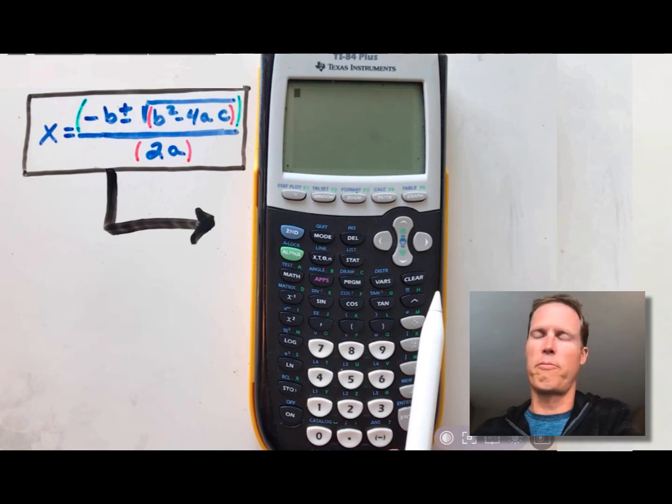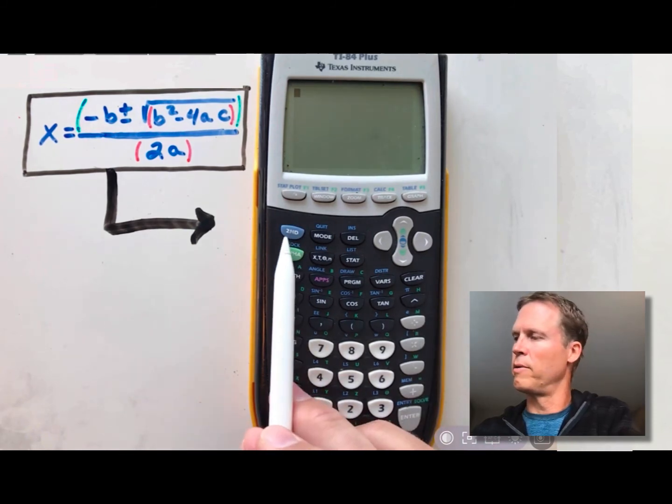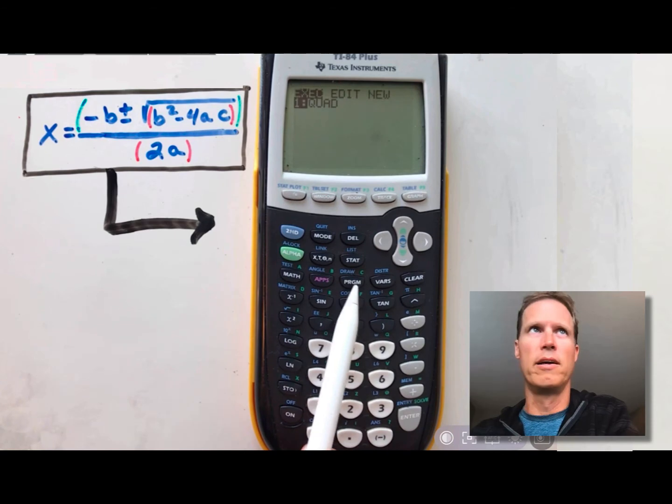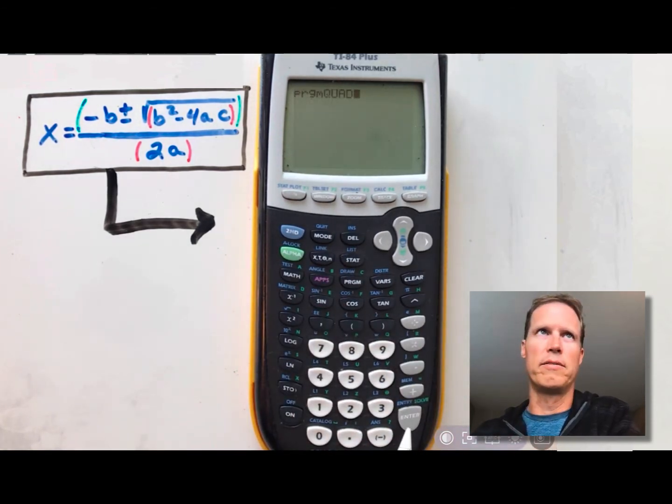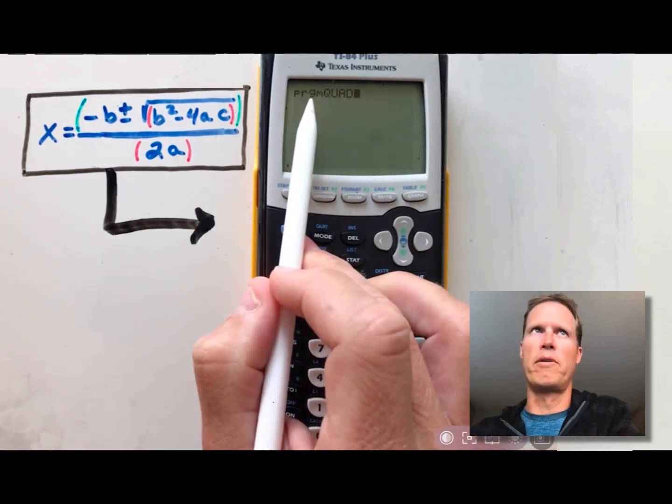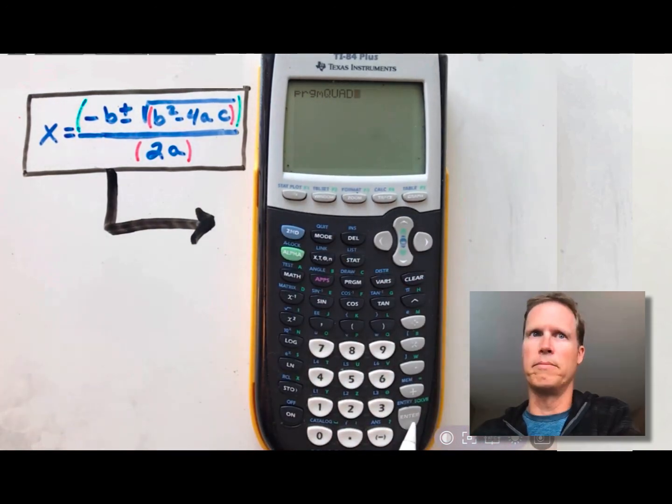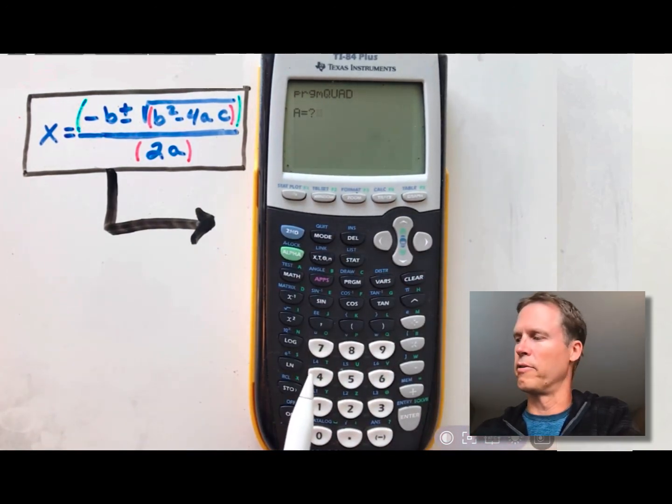Now, when you want to use your program, you're going to press the program button right here first. You'll notice the list of your program comes up. Then you press enter to actually use it. It'll post that program on your screen first. You have to press enter one more time. And then it prompts you for three letters. You can put in whatever you want.